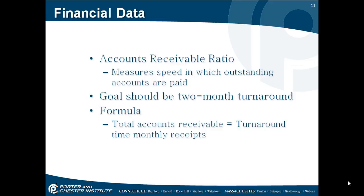Accounts receivable ratio is a formula that measures the speed at which outstanding accounts are paid. The accounts receivable ratio provides a picture of the state of the collection and probable losses. The longer an account is past due, the less likely of successfully making the collection. The goal is a two-month turnaround time. The formula is your total accounts receivable divided by your monthly receipts, which should equal your turnaround time.